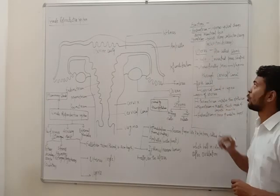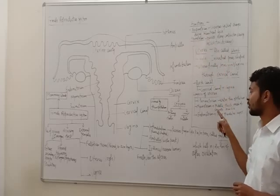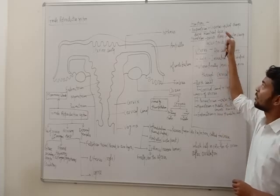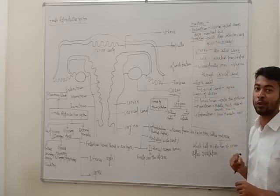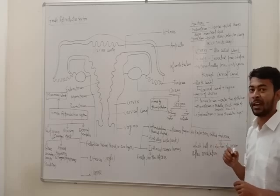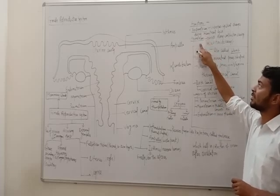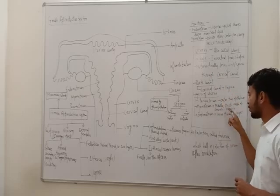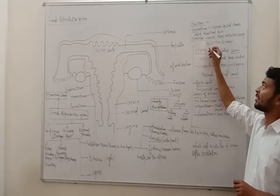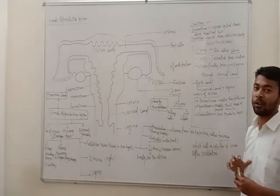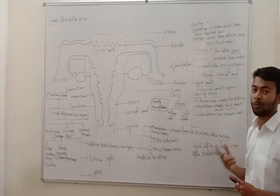The endometrium is the inner uterine layer which is of glandular nature. It undergoes cyclical changes during the menstrual phase — it breaks down during menstrual flow, regenerates through proliferation, and then undergoes a secretory phase. The middle layer, the myometrium, is made up of smooth muscle and exhibits strong contraction during delivery of the child, that is parturition. It has a neuroendocrine mechanism which works during parturition so that the myometrium undergoes contraction and helps in delivery.